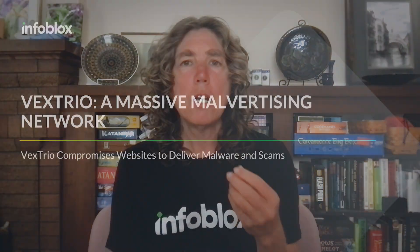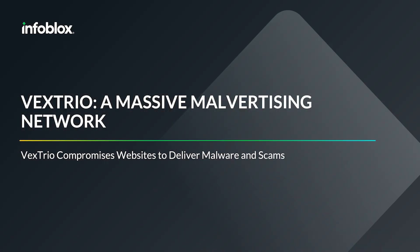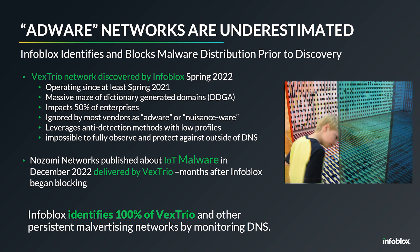I have three different examples that are quite different in how the actors operate and what their end goals likely are. The first one is Vextrio. Vextrio is a massive malvertising network. We've been tracking them for a year and a half now, and we wrote a long paper on them in August 2022. Vextrio effectively compromises websites to deliver a variety of different kinds of malware and scams. It's often called adware, and it is a classic example of how adware in the security community is underestimated.